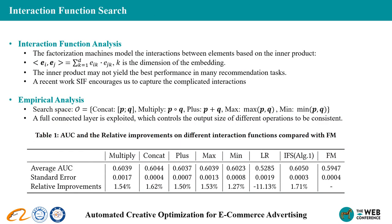Let's have a look at the interaction function search. We analyze the interaction functions to estimate the CTR. FM is a classical method to model interactions based on the inner product, but the inner product may not yield the best performance in many recommendation tasks due to the complex nature of interactions. A recent work, SIF, searches for the interaction functions between user and item embeddings. We pick five simple and popular operations as mentioned in SIF and conduct offline experiments to demonstrate that different interaction functions between feature fields yield different performances, providing evidence that more appropriate interaction functions exist between different elements.